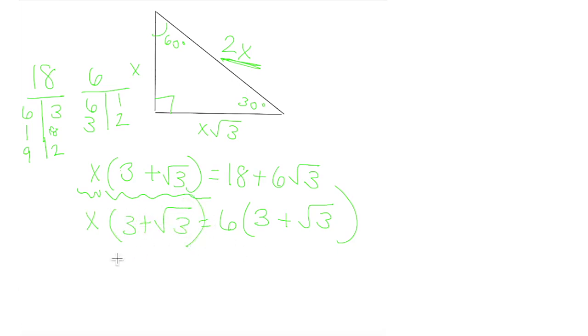So x times 3 plus root 3 equals 6 times 3 plus root 3. So with our same constants rule we were using before, we can compare these two, these will cancel out, and x equals 6.